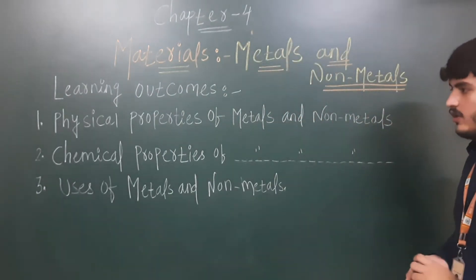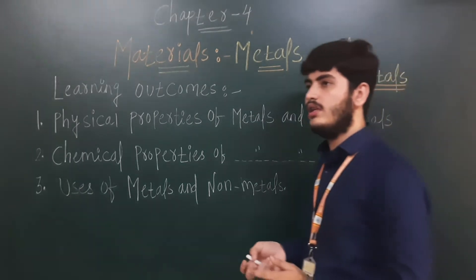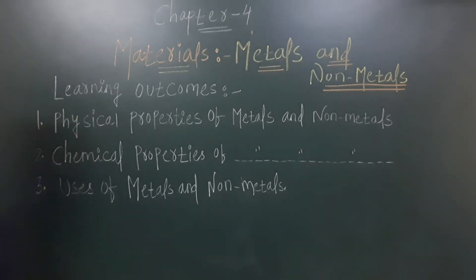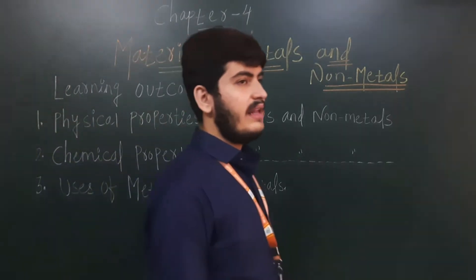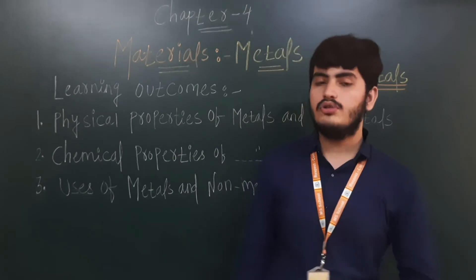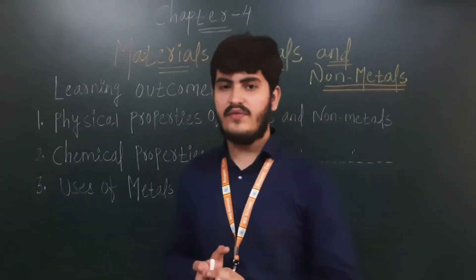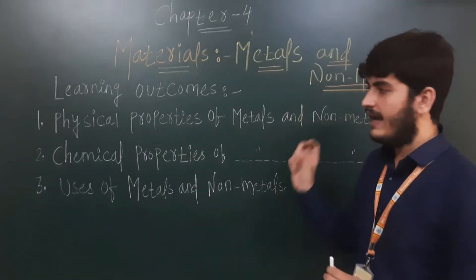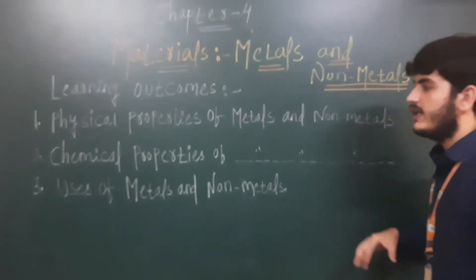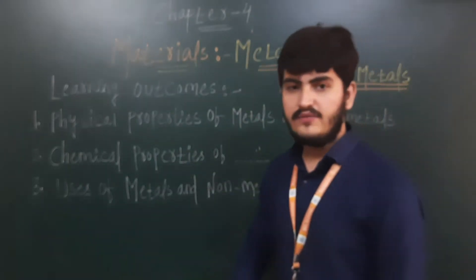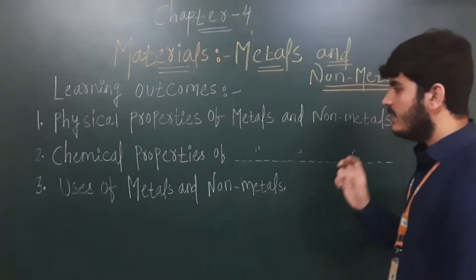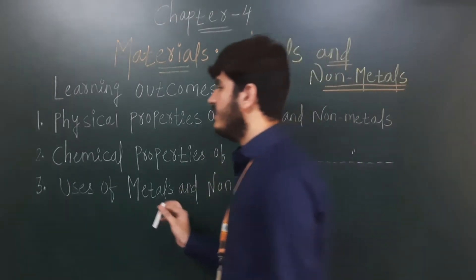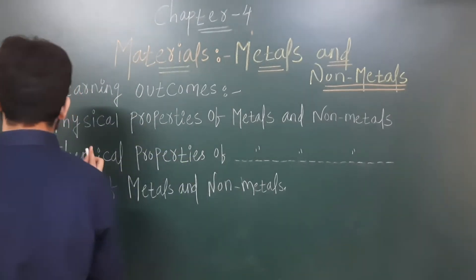Moving to the next learning outcomes: you will learn about the physical properties of metals and non-metals. If anyone asks you to distinguish which one is a metal and which is a non-metal, you can easily do so if you know the physical properties of metals as well as non-metals. After that, we will also see the chemical properties of metals and non-metals.